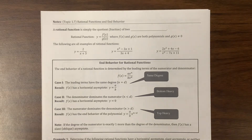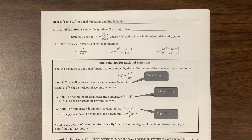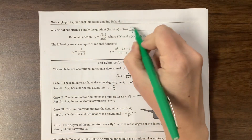Howdy, AP Calculus. It's Ms. Kosh, and we are looking at rational functions. A rational function is simply the quotient or the fraction of two polynomials.